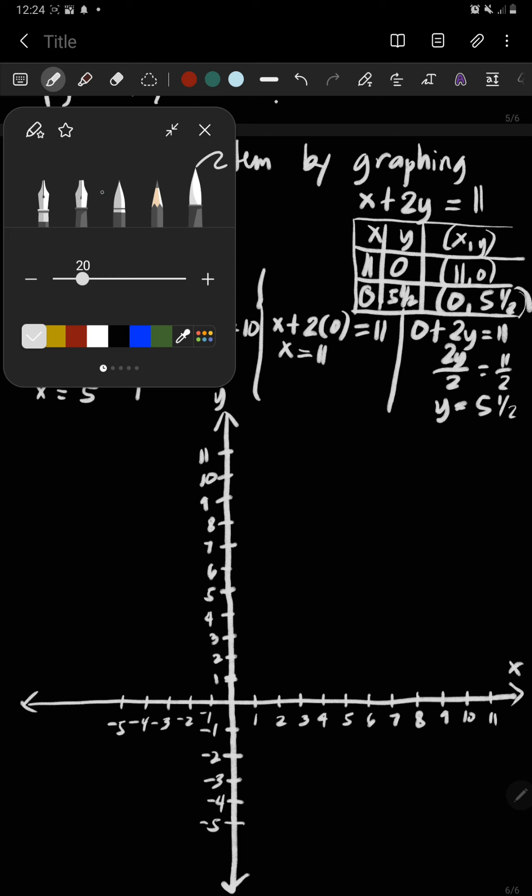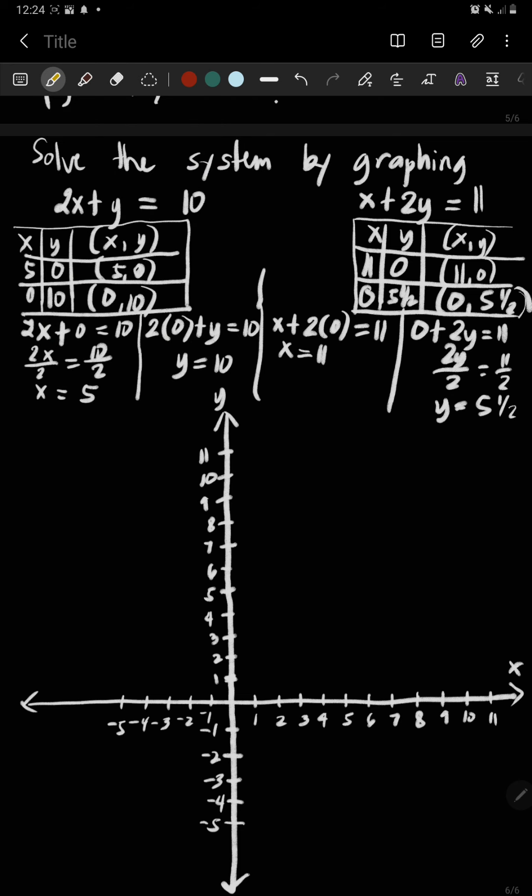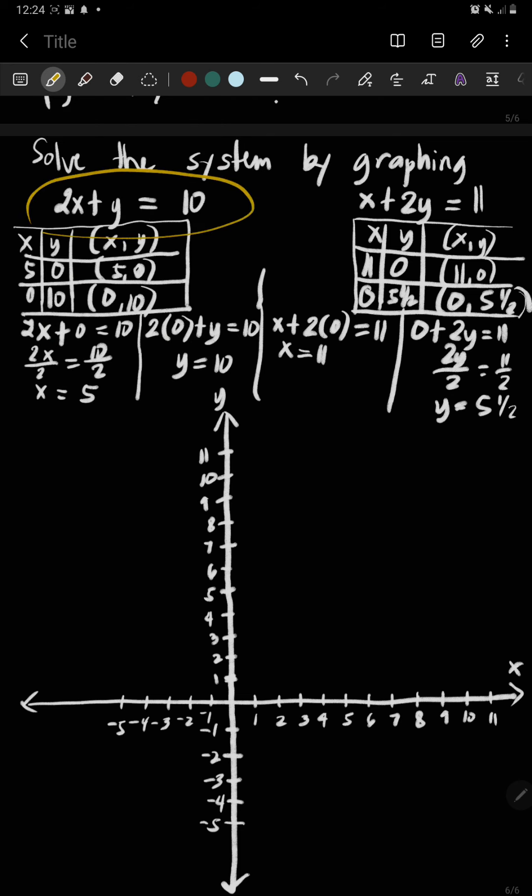Okay, let's graph. You start with 2x plus y equals 10. So you have there 5, 0 along the x-axis. And then you have there 0, 10, that is along the y-axis. And then you connect.